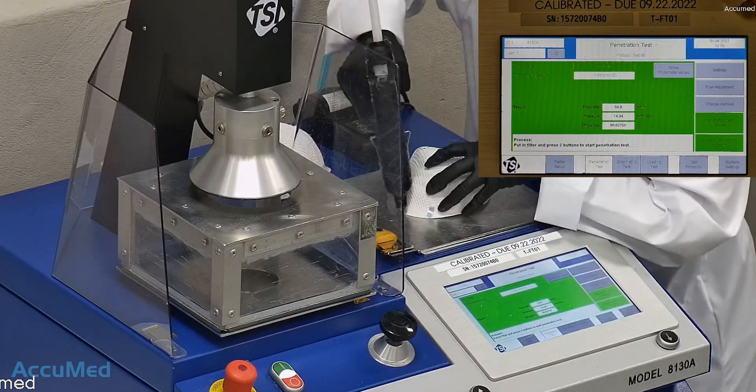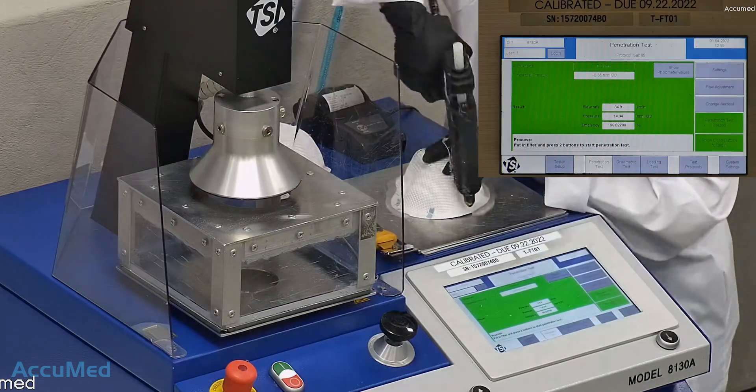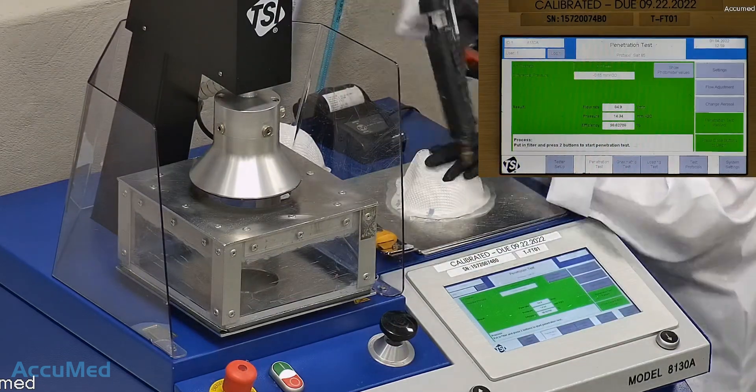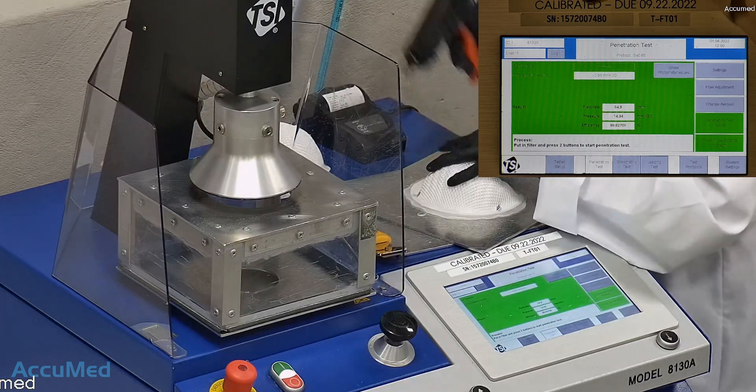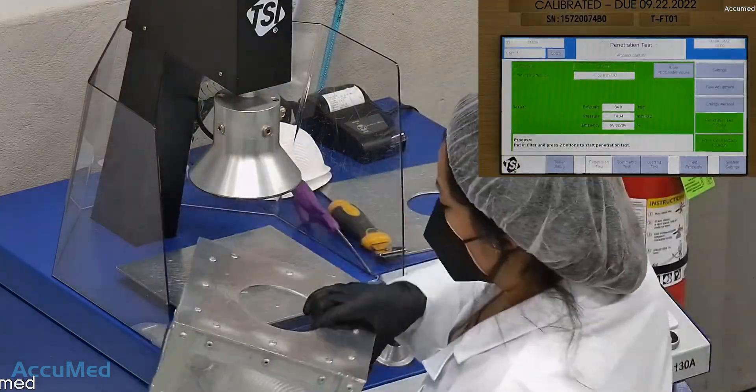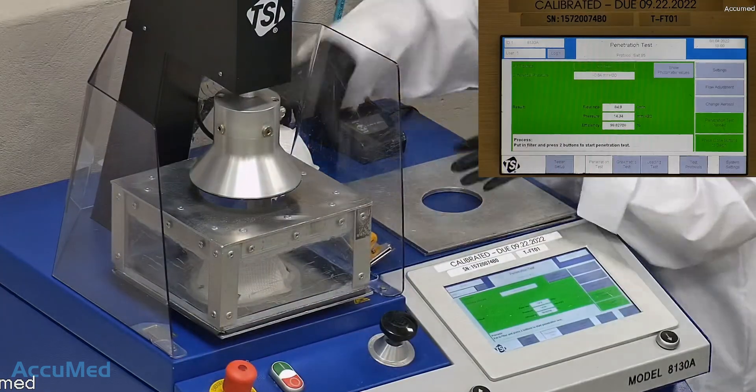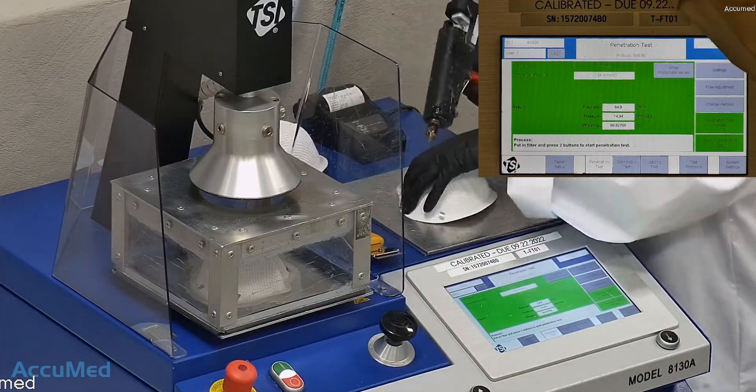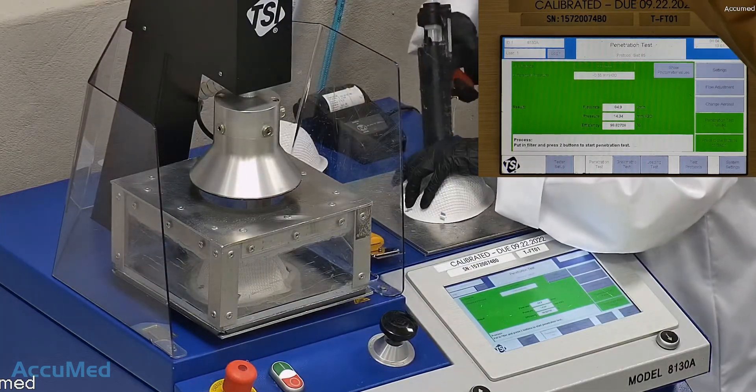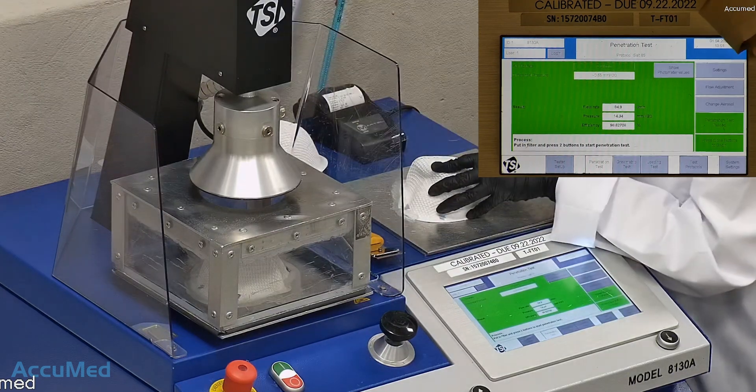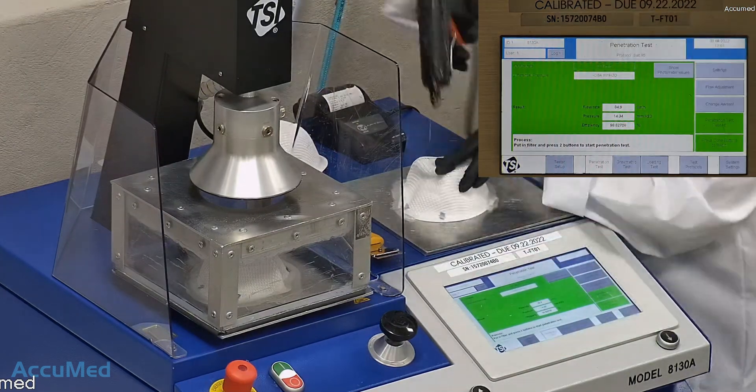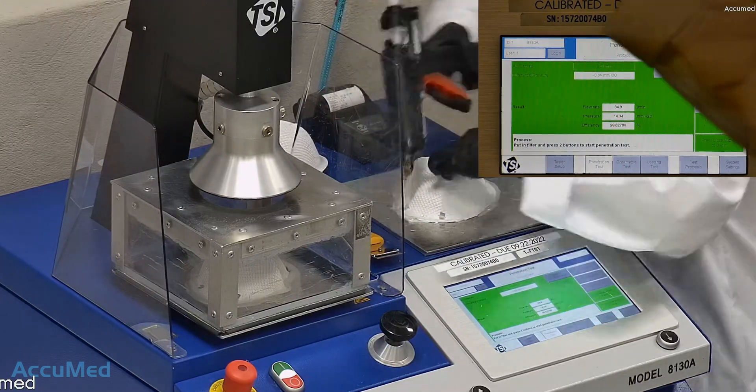We first run a tester setup and start removing the headband from the respirator before placing it onto the testing plate to ensure a proper seal. Then we make sure that the mask is properly and completely sealed with hot glue to the testing plate. When applying the hot melt glue, we make sure that there is no holes or leakage around the seal to ensure accurate results. The testing plate is then attached to the frame and the box is placed under the TSI filter holder for testing.